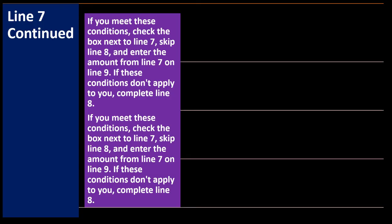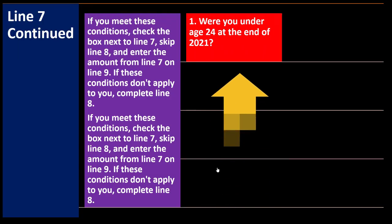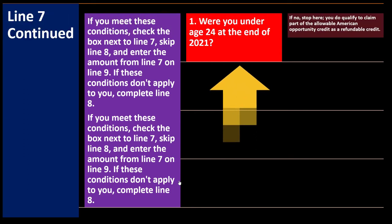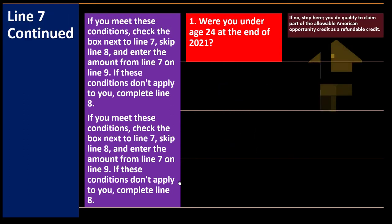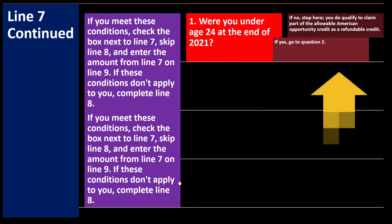To summarize the flowchart: Question 1 — were you under age 24 at the end of 2021? If no, stop here — you do qualify to claim part of the allowable American Opportunity Credit as a refundable credit. If yes, go to question 2.